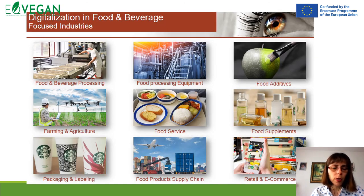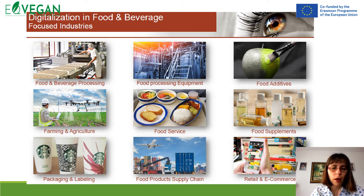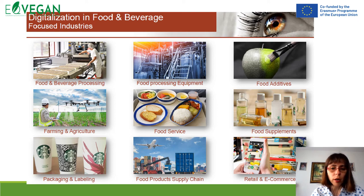There are different examples of digitalization in the food and beverage industry: food and beverage processing equipment, testing food additives, digitalization in farming and agriculture using smart drones, sensors, and infrared cameras to optimize agri-processing, food service, production of food supplements, digitalization in production of packaging and labeling, monitoring and optimizing the food product supply chain, as well as retail and e-commerce.